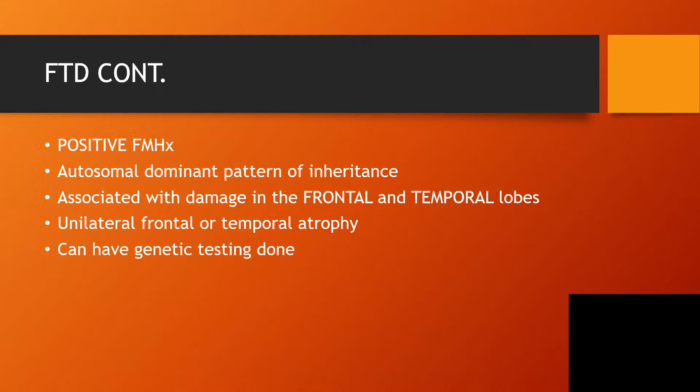There would likely be a positive family history, and it's going to follow an autosomal dominant pattern of inheritance. In other words, once the gene causing this problem is inherited, it is going to manifest phenotypically, associated with damage in the frontal and temporal lobes of the brain. There is a possibility of unilateral frontal or temporal atrophy, and you can have genetic testing done when you have a family history.